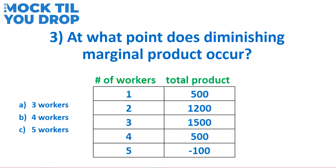The last question we're going to answer is at what point does diminishing marginal product occur? Let's say you saw this problem on an exam and you're given three answer choices. A candidate who doesn't have a good understanding of this concept might see the keyword 'diminishing' and notice that total product is increasing from workers one through three, so they may decide on answer choices B or C. They might think it's B because total product declines from three workers to four workers, or C because it's a negative total product. Most candidates would likely choose B, and some might even choose C. As it turns out, neither of these answer choices are correct.